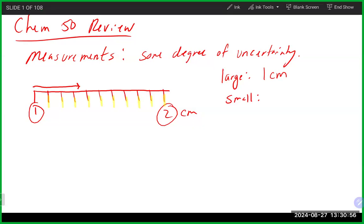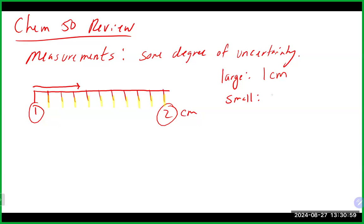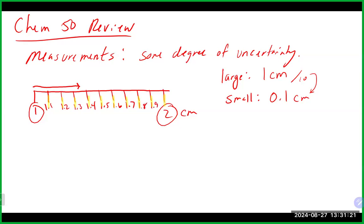That means each of the small markings represents one divided by ten, which is 0.1 of a centimeter. That means the markings go 1.1, 1.2, 1.3, 1.4, 1.5, 1.6, 1.7, 1.8, 1.9, and 2.0 as we go across.